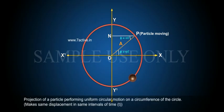Projection of a particle performing uniform circular motion on the circumference of the circle makes same displacement in same intervals of time, T.